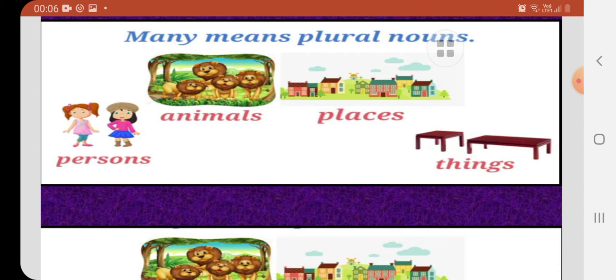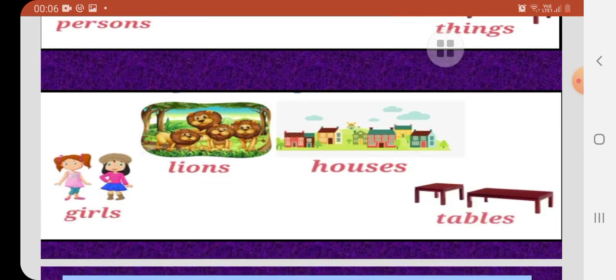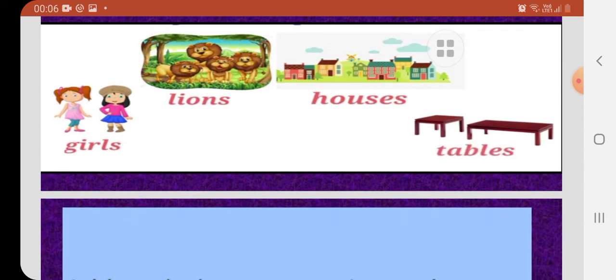So children, many means plural noun. Many means plural noun. Here, many persons are there, many animals, many places, many things are there. So children, example, girls, lions, houses and tables.